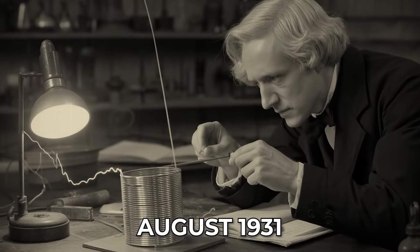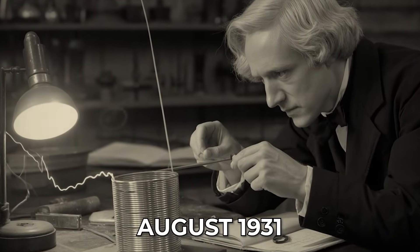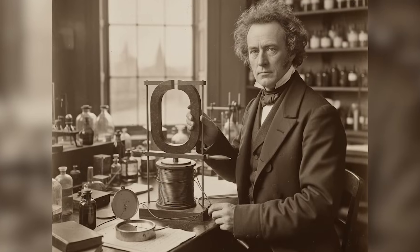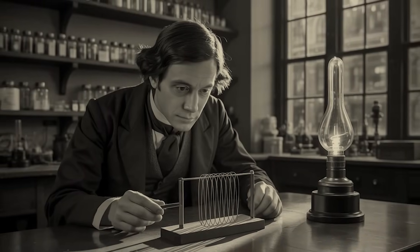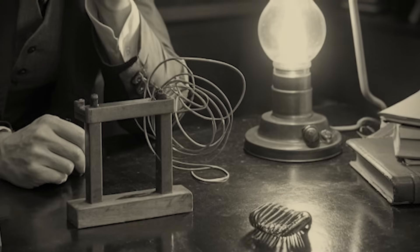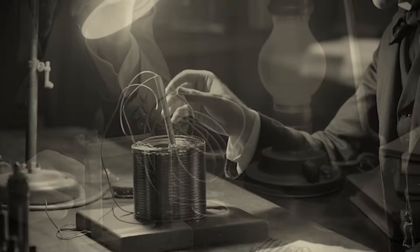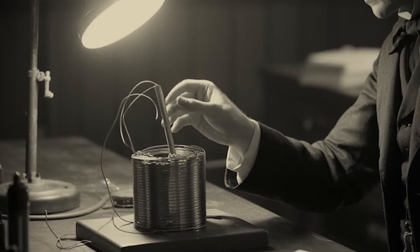In August of 1831, Faraday was experimenting with a device that consisted of a bar magnet and a coil of wire. To his surprise, when the magnet was moved near the wire, it induced a brief electric current. This discovery, though seemingly simple, was profound in its implications.